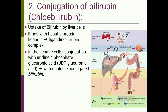In the hepatic cell, bilirubin gets conjugated with uridine diphosphate glucuronic acid (UDP-glucuronic acid). This is known as conjugated bilirubin. Conjugated bilirubin is water soluble and can be excreted.